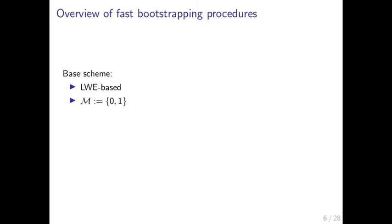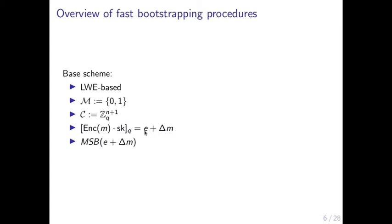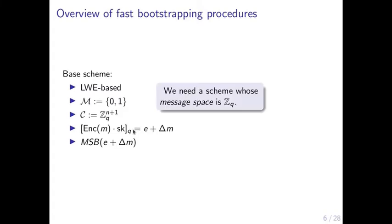The base scheme is a simple scheme that encrypts bits into vectors mod q. Decryption is done in two steps. The first step is a linear one in which we compute the inner product of the ciphertext vector with the secret key vector, obtaining the message multiplied by some scaling factor plus the noise. The second step is just extracting the most significant bit of this value. Since this step is computed mod q, it's natural to use a scheme whose message space is Z_q.